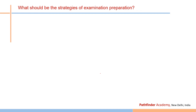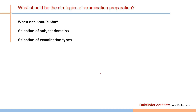The most important thing now is examination preparation strategy. First, start your preparation early to get maximum time for syllabus coverage and question practice. Second, select your subject domain — at the MSc level you have options in life sciences, biotechnology, biochemistry, microbiology, botany, zoology, and bioinformatics. Third, select the examination types you want to target, since most institutions have their own entrance tests and it is very difficult to appear for all of them.